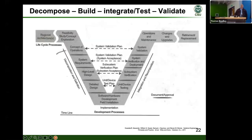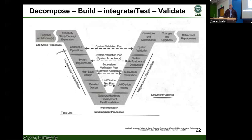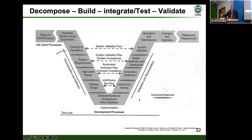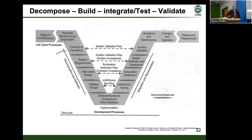We have the systems engineering V, and in broad brush, we start in the upper left with needs analysis and feasibility, then decompose down in search of knowledge because we have questions that need answers when dealing with state-of-the-art uncertainties. There is a test and evaluation component happening all along the left side of that V. At the bottom we start building, and then there is an integration and aggregation aspect going up the right side that is also heavily test-and-eval dependent. T&E is not a speed bump at the end — it is integrated throughout the entire V.